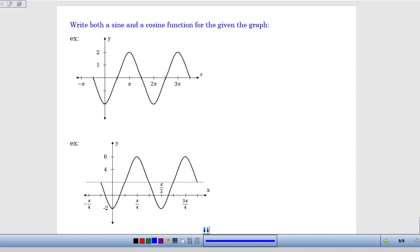If we start at a zero, for example like this location right here, then it's a sine function because that's where the parent graph starts - sine starts at zero. But if we pick this top point right here, or one of the bottom points, then it would be a cosine graph because cosine starts at a maximum.